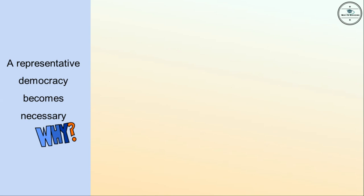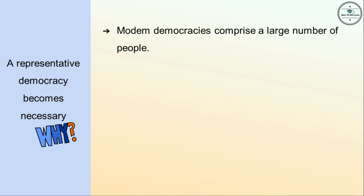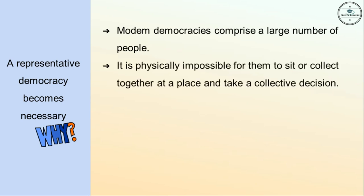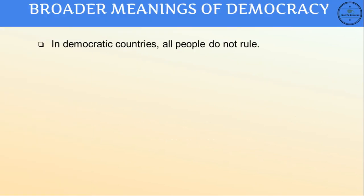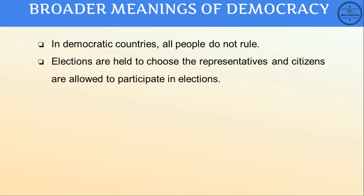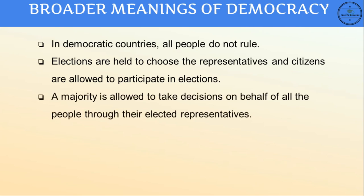A representative democracy becomes necessary because modern democracies comprise a large number of people. It is physically impossible for them to sit together at one place and take a collective decision. Even if they could, all citizens do not have the time, desire, or skill to take part in all decisions. In democratic countries, elections are held to choose representatives, citizens are allowed to participate in elections, and a majority takes decisions on behalf of all people through elected representatives.